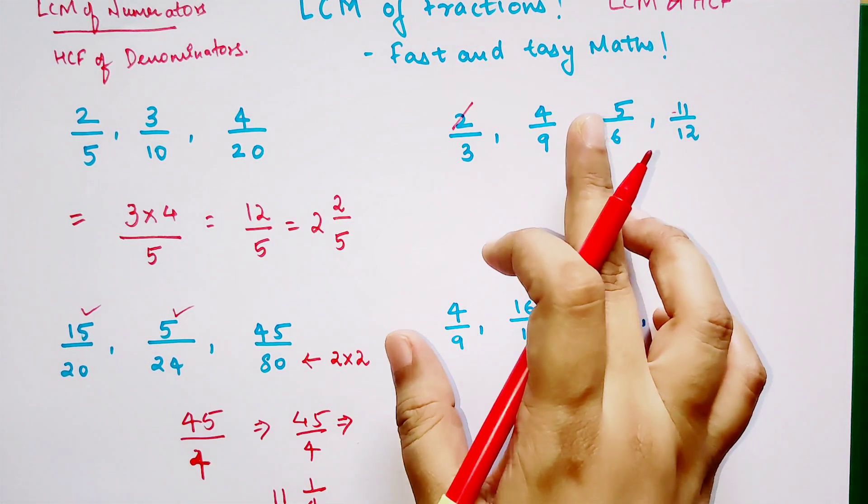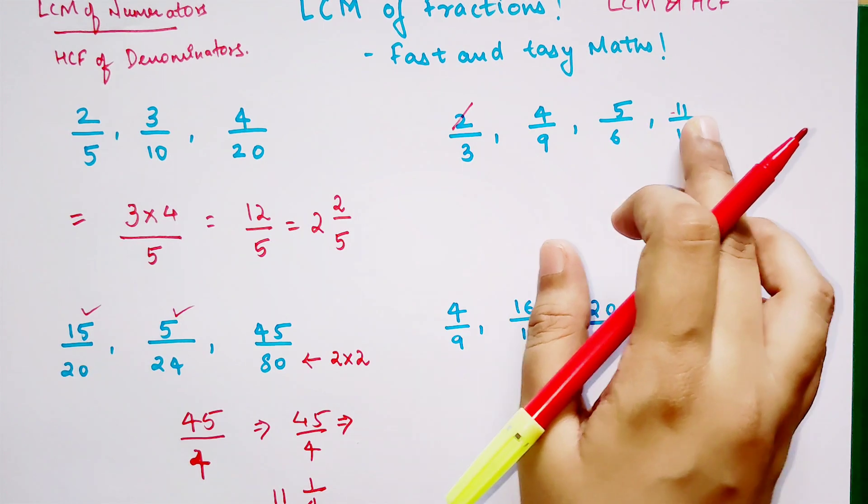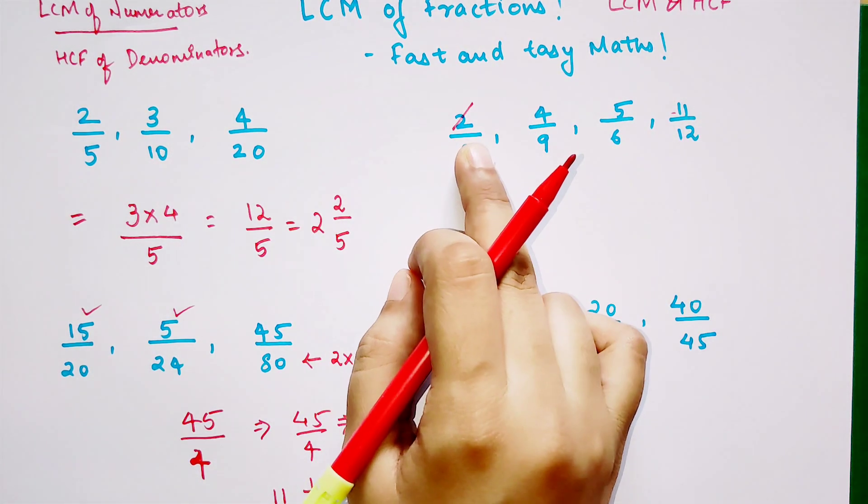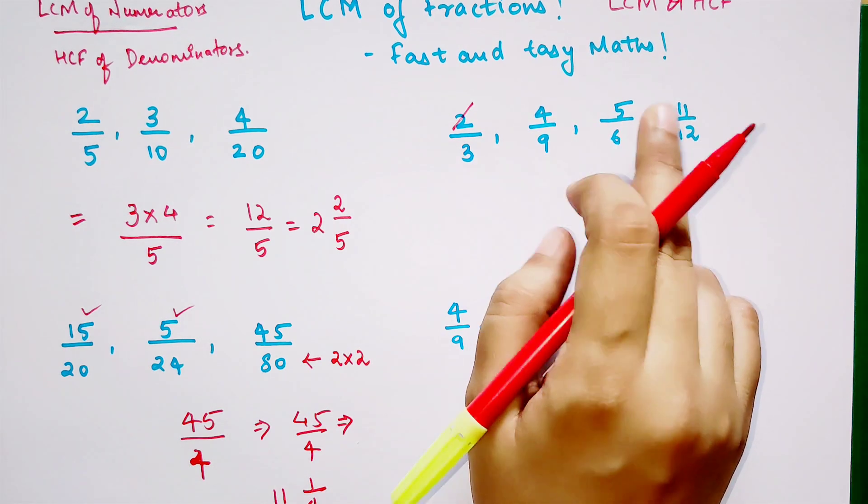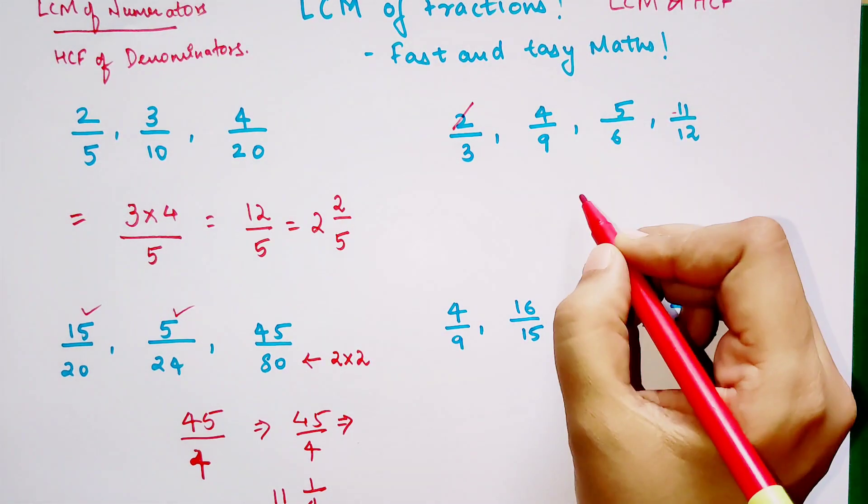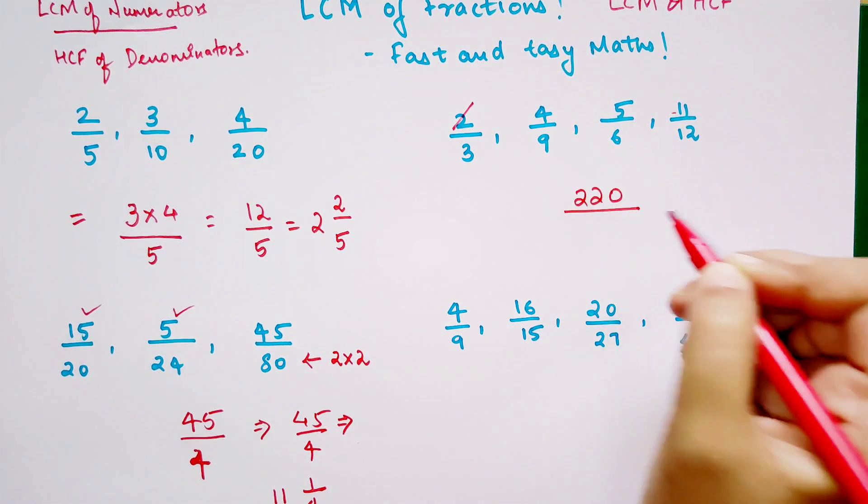Now please understand, students, you can multiply 5 and 11, which is 55, and then multiply by 4. Or simply multiply 4 into 5, which is 20, and 20 into 11 will get you 220.